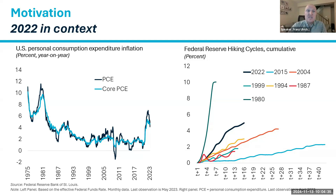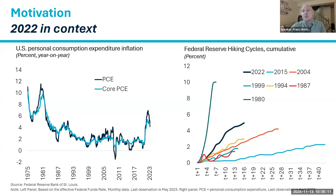On the left chart, you can see PCE inflation — personal consumption expenditure inflation in the United States — and its evolution since 1975. PCE inflation went up to something like 7% at its peak. These charts end around mid-2023, so more recent information is not included. But quite clearly, this was a substantial shock relative to the prior decades — we didn't see inflation rates like this since the early 1980s.